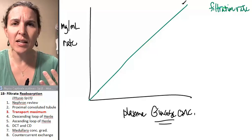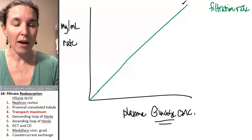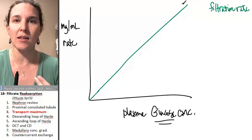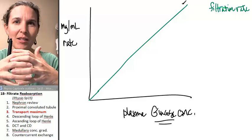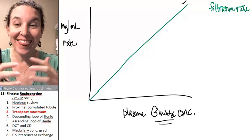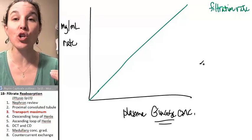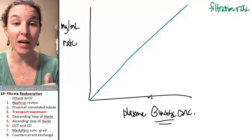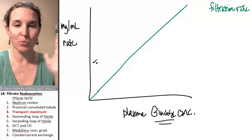The glomerulus and Bowman's capsule, they're like, I don't care what's in there. As long as it fits through the fenestrated capillaries and the filtration slits of the podocyte pedicels, then we'll take it all. So filtration rate, there's no limit to filtration rate. The more glucose you have in your plasma, the more you're going to filter.